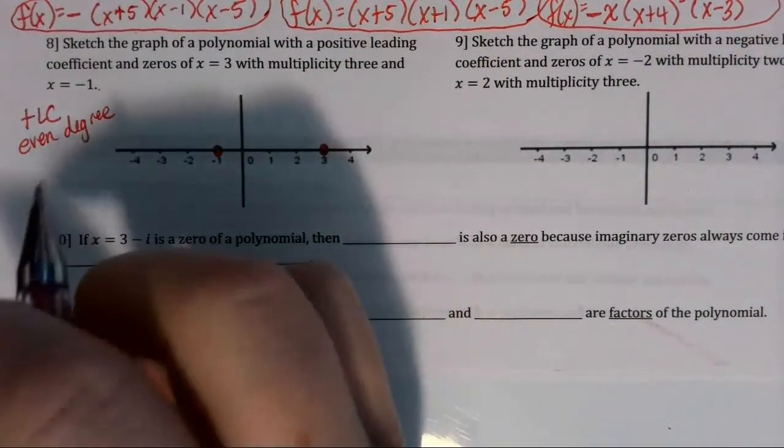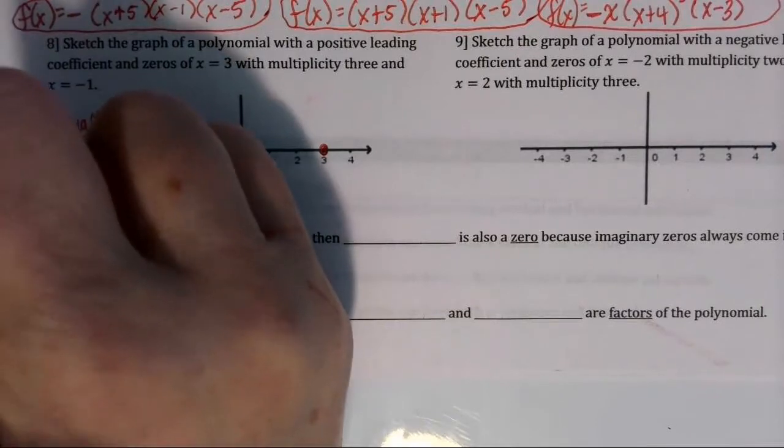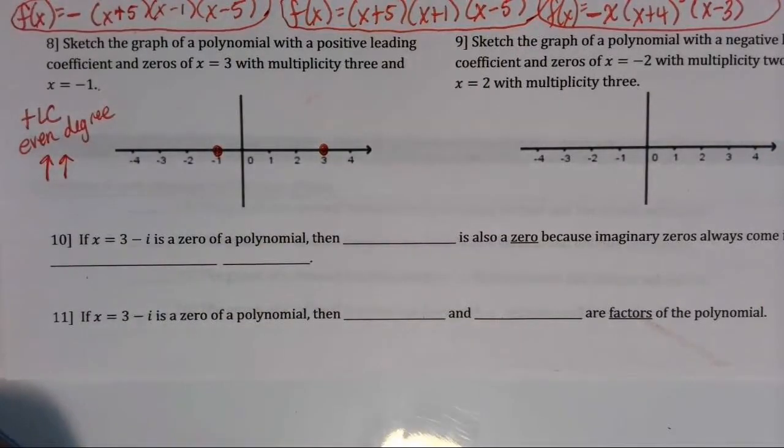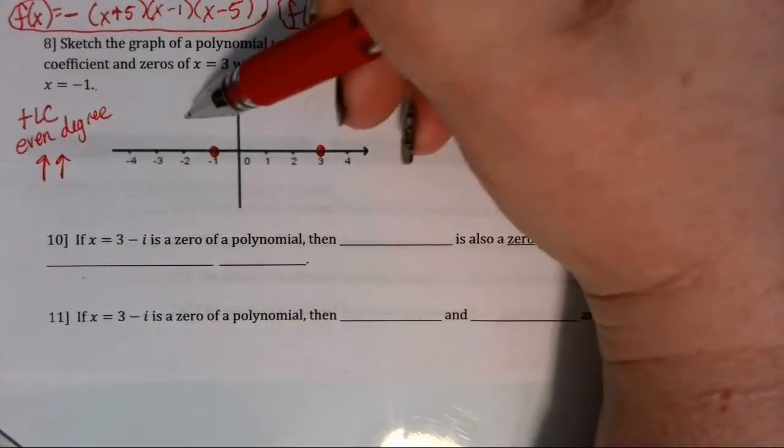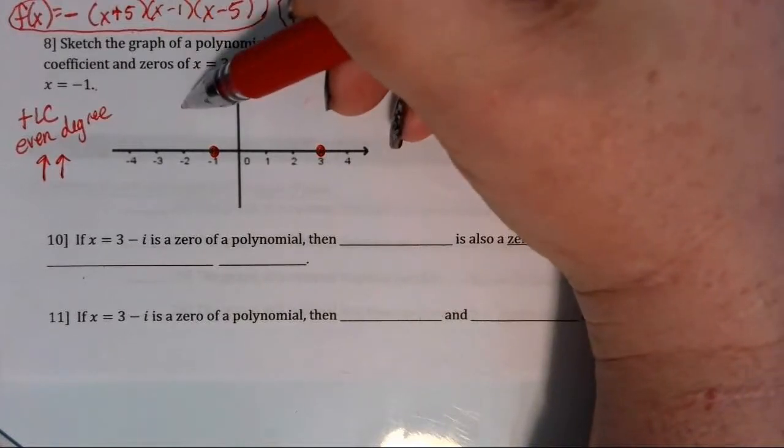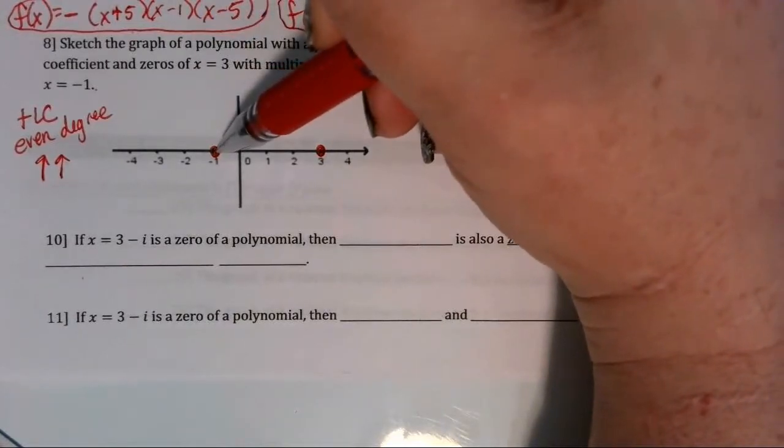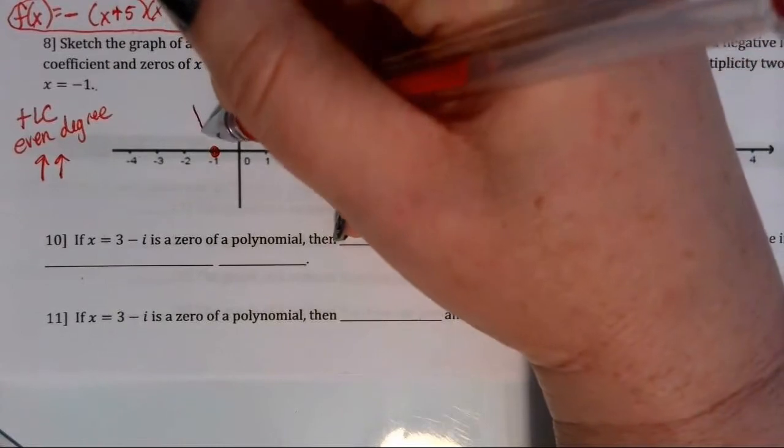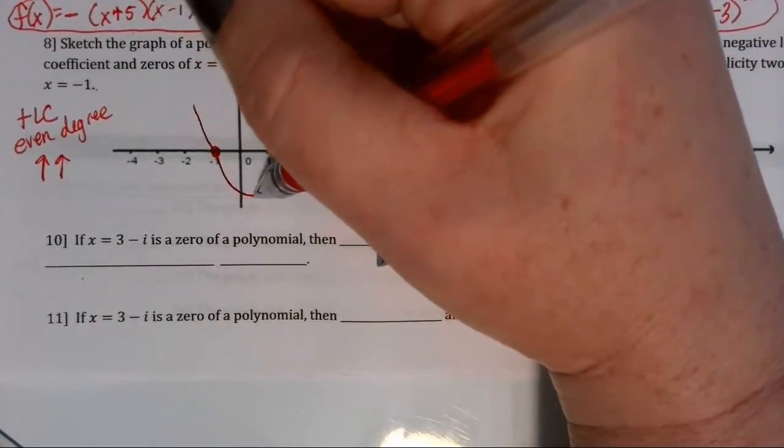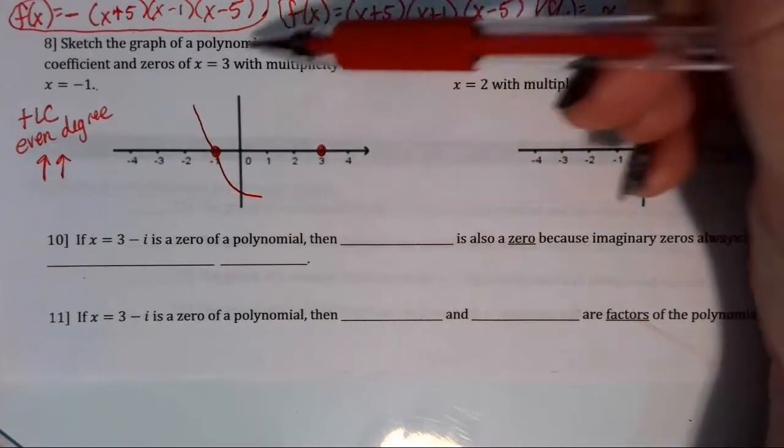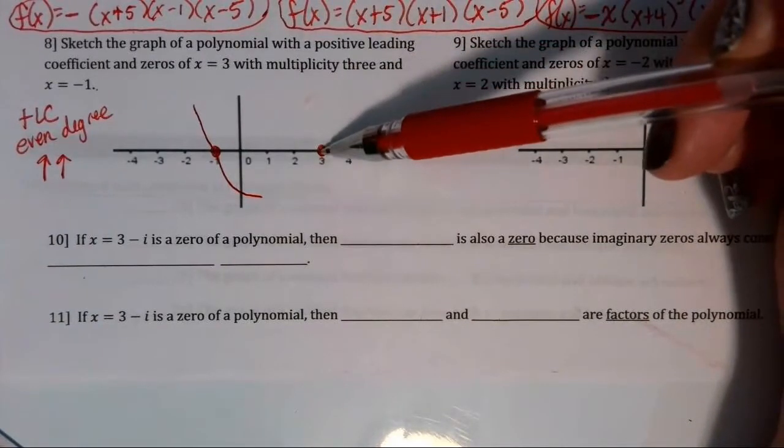So the leading coefficient test tells me that both ends have to face up. If I have to start up on the left and have a linear factor of negative 1, my graph has to cross through the negative 1. And then I have multiplicity of 3 at this zero of positive 3 and I have to end facing up.